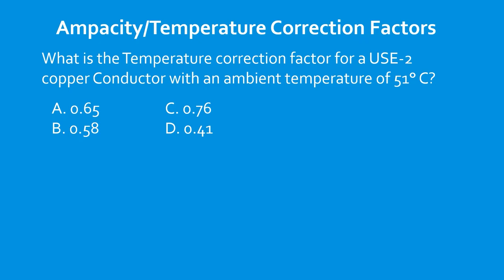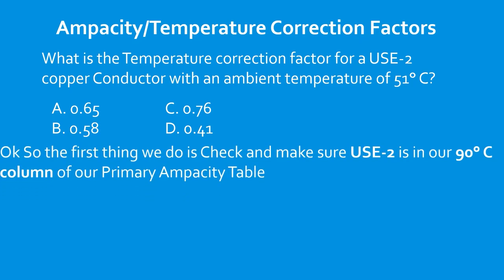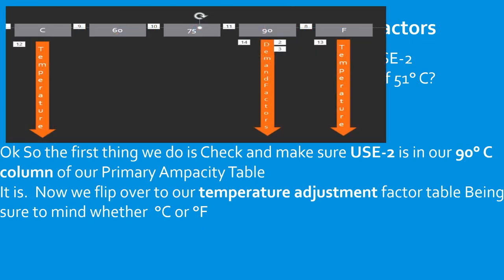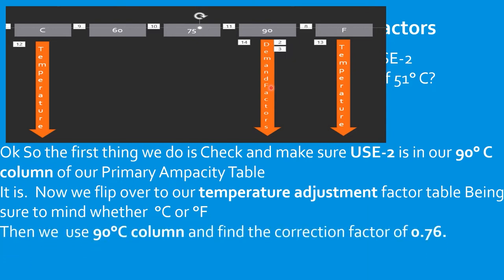Question: What is the temperature correction factor for a USE-2 copper conductor with an ambient temperature of 51°C? Confirm USE-2 is in the 90°C column — it is. Flip to the temperature adjustment factor table. This is in Celsius, so start on the left-hand side, come down to 51°C, then come all the way over to the 90°C column. We find a correction factor of 0.76.